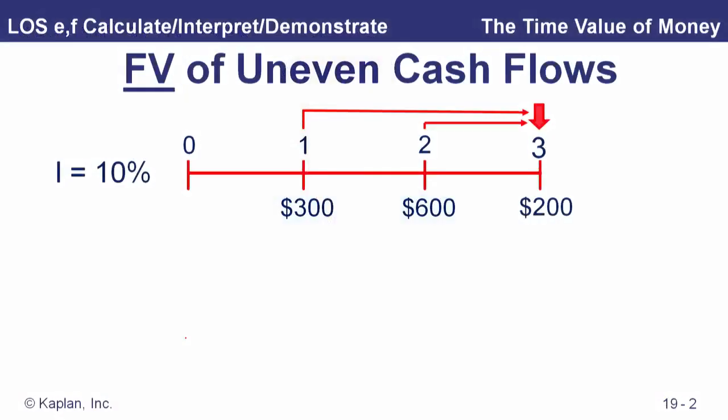Let's look at some uneven cash flows — not an annuity, but payments that have different values. We're going to calculate the future value of three deposits into an account: payments of $300, $600, and $200. How much will we have in the account at time three if we're earning interest at a rate of 10% compounded annually?